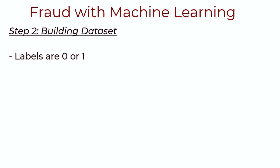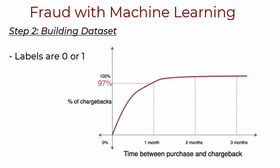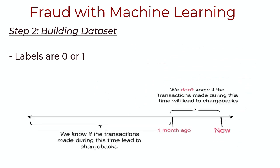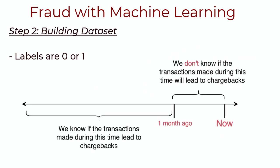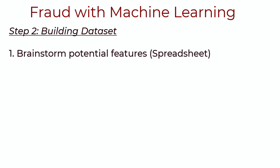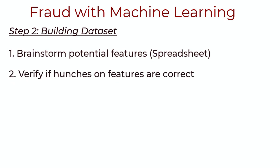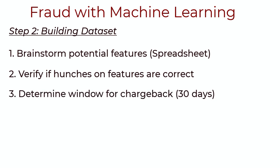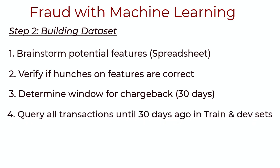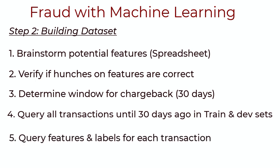Now let's build the labels. The labels for each transaction are either fraudulent or not fraudulent, and we only know this label if someone files a chargeback for that transaction. Let's say 97% of chargebacks are filed within one month of a transaction occurring — you can verify this by querying the data. This means you can take all transactions up to about 30 days ago as your training dataset, since if they had been fraudulent, you would have already seen a chargeback. Overall: brainstorm features, verify them with EDA, determine the chargeback time window, query transactions up to that window, and get the corresponding labels.